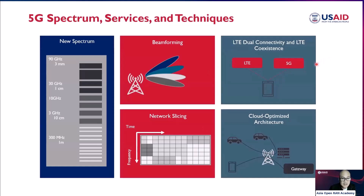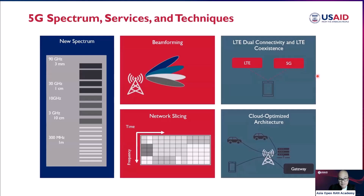We also have network slicing. Unlike in LTE where we used a shared core network for everything, in 5G we have different slices. There is a slice for eMBB, a slice for MMTC, and a slice for URLLC — they are not mixed together in the core network. If you are an eMBB user downloading data, you are not mixed with URLLC users or IoT users. You have a different virtual slice of the network while still using the physical network — that is network slicing.